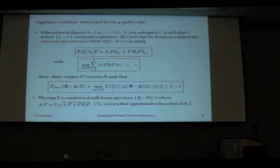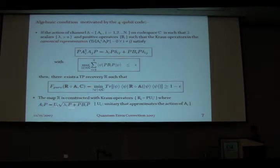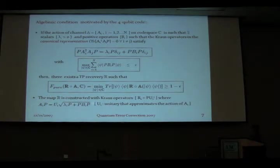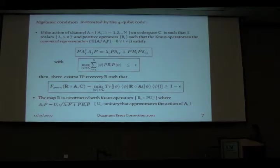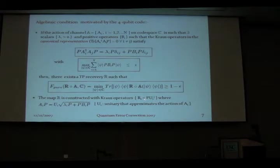How do we construct this recovery? By doing a polar decomposition of the Krauss operators, we obtain unitaries UI. This polar decomposition tells us the Krauss operators are almost unitary on the code space, because the bi's are very small, bounded by epsilon. So it is sufficient to use the adjoints of these unitaries UI to write down the recovery map — the recovery is merely the adjoint of these unitaries followed by a projection on the code space. This is essentially the same kind of recovery used in perfect error correction.